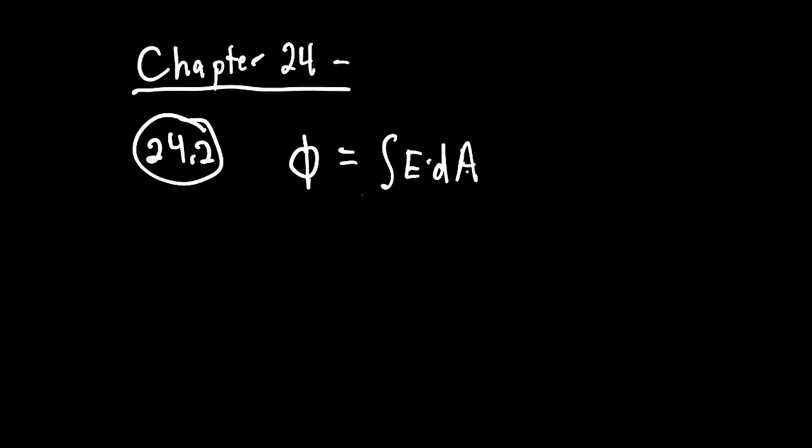The nice thing about Gauss's law — and this is apparently true, we can't really get into why — it has to do with fundamentals of how electromagnetism works. Flux is always equal to the integral of E dot dA, which is always equal to charge enclosed over epsilon naught. So even if the area changes, if I increase or decrease the radius, the electric field is also going to change so that you always get Q over epsilon naught.